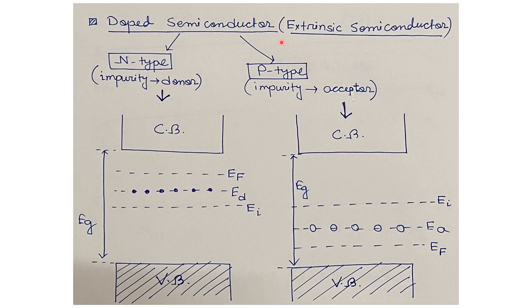If we perform external doping in an intrinsic semiconductor, it becomes a doped or extrinsic semiconductor. Depending on the type of impurity doped, it is classified as n-type or p-type. In n-type semiconductors, the doped impurity acts as a donor of electrons to the conduction band, increasing electron density. In n-type band diagrams, the donor energy level ED lies above the intrinsic Fermi level Ei, and at zero Kelvin all donors are in the unionized state.